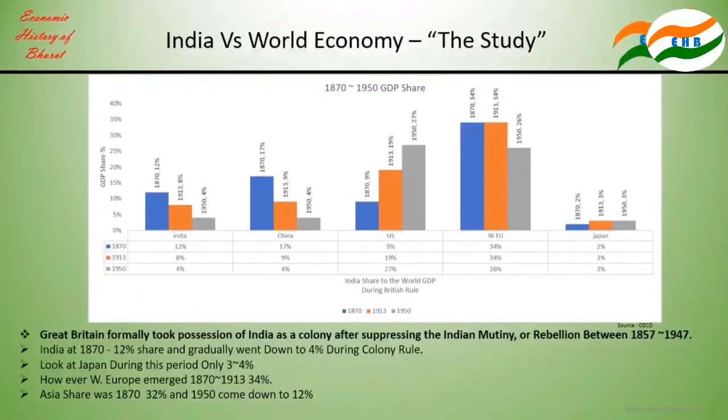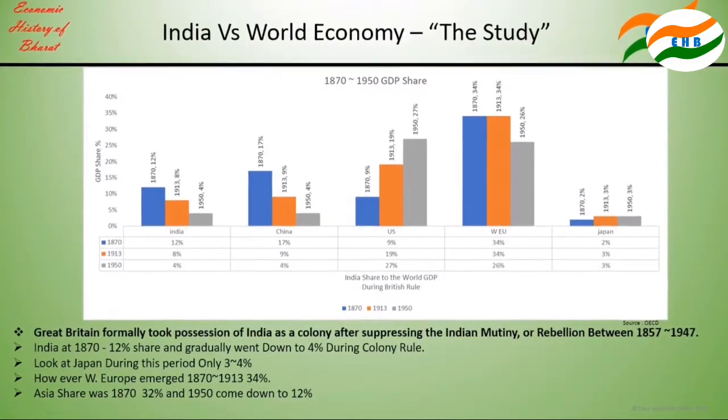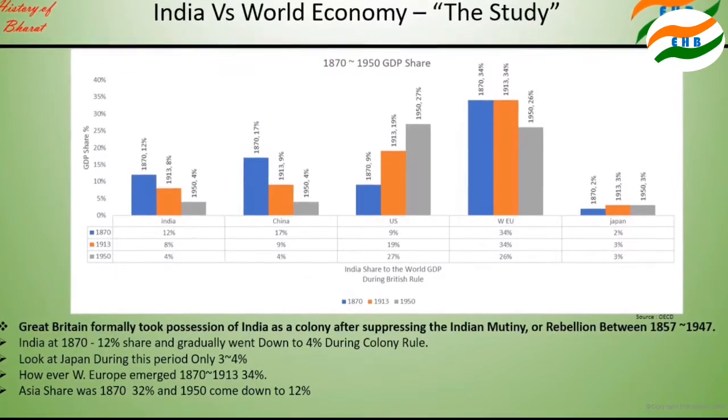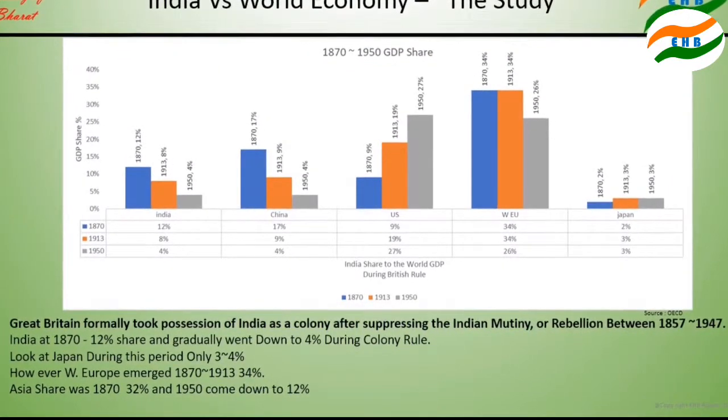We will look at three periods: 1870, 1870–1913, and 1913–1950. In 1870, our share of world GDP was around 12 percent. However, as I mentioned in Episode 1, in the 0th year — 0 CE — our economic share was above 33 percent.